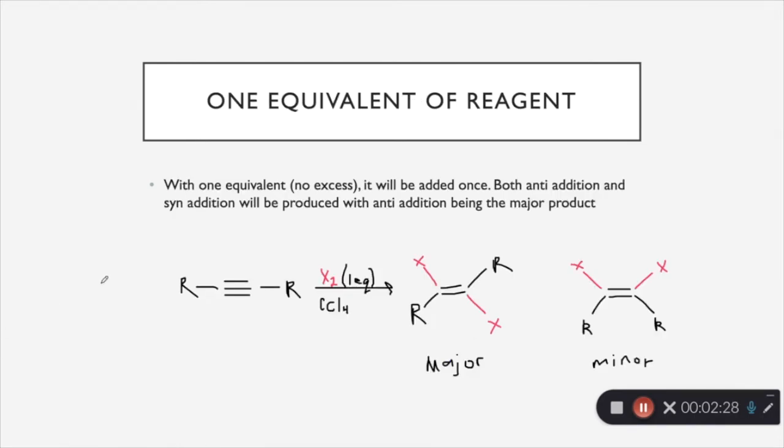We basically covered this in the last slide. I gave you an example of if you had one equivalent of reagent instead of an excess and then, if we did have an excess, how it would just keep going and repeat itself. But, if we do have one equivalent, no excess, the reagent will be added once and both the trans and cis conformations will be formed. Notice here, I have that the major conformation is going to be the trans conformation and the minor conformation is going to be the cis conformation. This is because if you remember from the alkene chapter, alkenes are happiest in the trans formation and this is how it is most stable. So, if we are to add a halogen one time to a triple bond with one equivalent of it, the major product that is formed will be the trans alkene and then, the minor product will be a cis alkene.